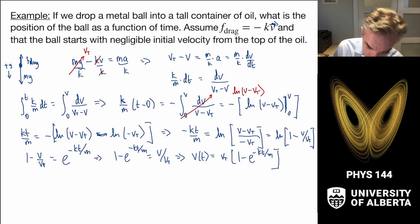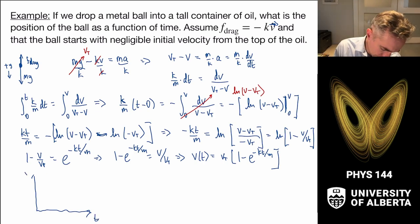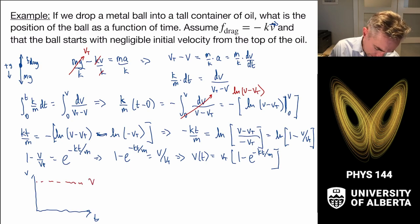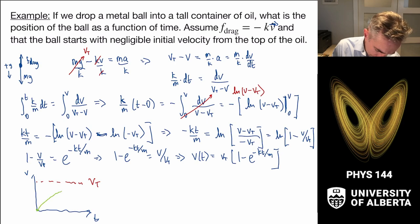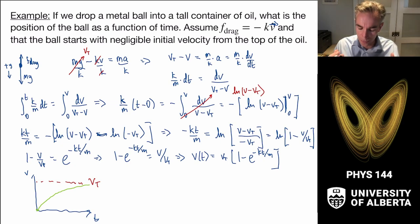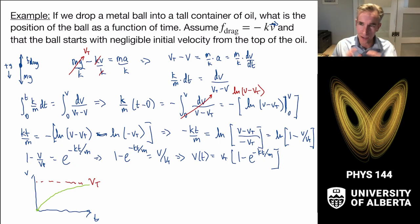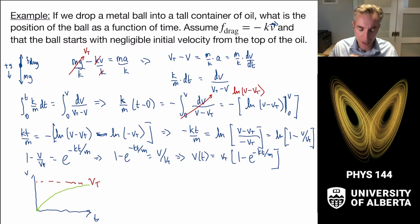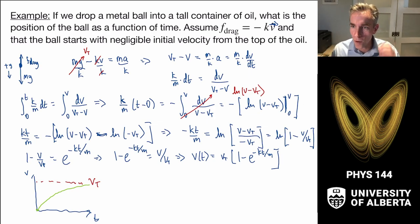Looking at V(t) = V_t·(1 minus e^(−kt/m)): this starts at zero and rises asymptotically toward the terminal velocity. The exponential means it gets closer and closer to V_t but never actually arrives — it only reaches terminal velocity in infinite time. That's really cool.